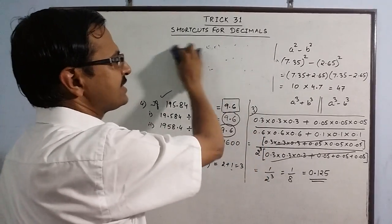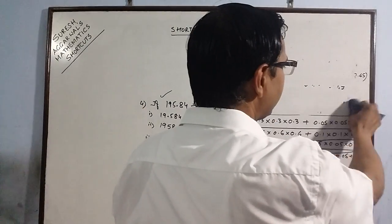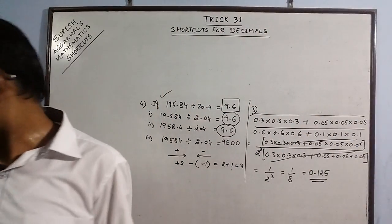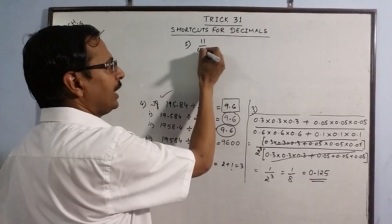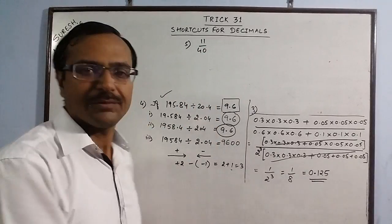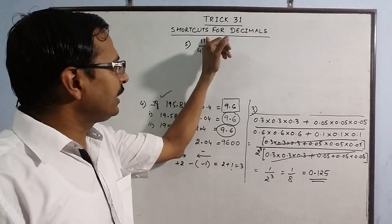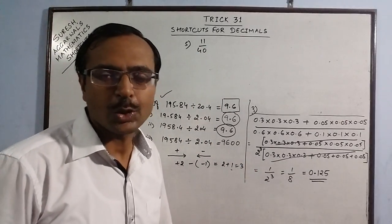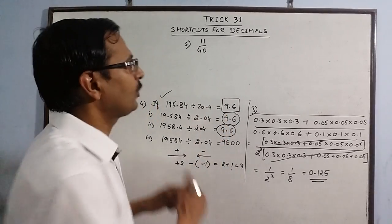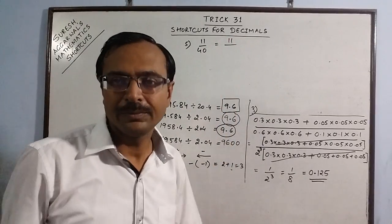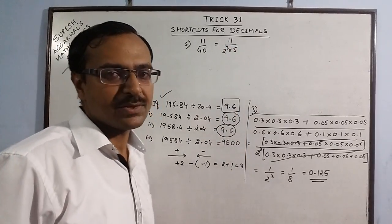Now let us come to another decimal shortcut asked in exams quite frequently. This time I am dealing with non-terminating and terminating decimals. Suppose we have the fraction 11 upon 40 and we have to find its decimal representation. You can divide 11 by 40, but I will tell you a shortcut to arrive at the decimal representation of any terminating decimal without division. Make the prime factors of the denominator: 40 = 2³ × 5.